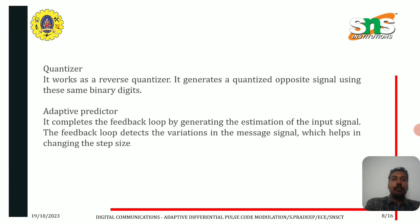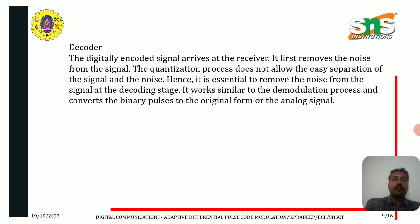The adaptive predictor completes the feedback loop by generating an estimation of the input signal. The feedback loop detects the variation in the message signal, which helps in changing the step size. The digitally encoded signal arrives at the receiver, where it first removes the noise from the signal. Since the quantization process does not allow easy separation of signal and noise, it is essential to remove the noise at the decoding stage. It works similar to the demodulation process and converts the binary pulses back to the original analog signal.